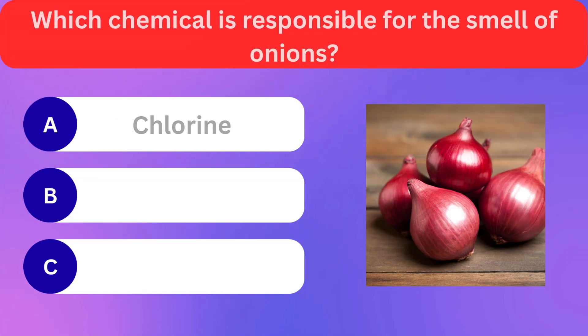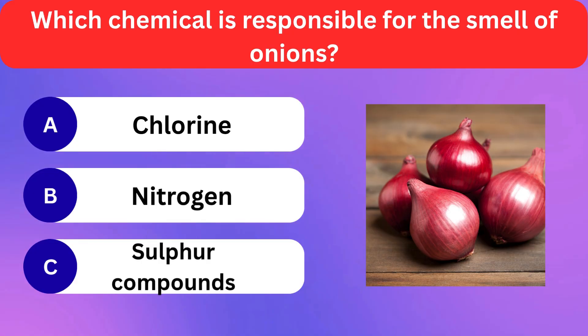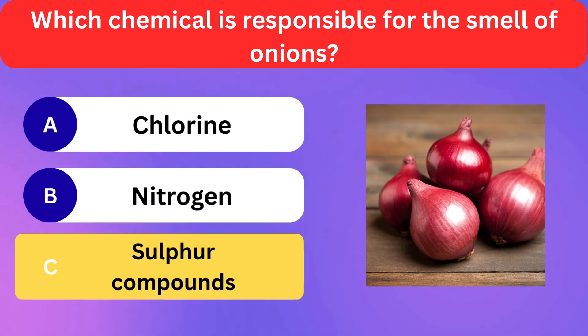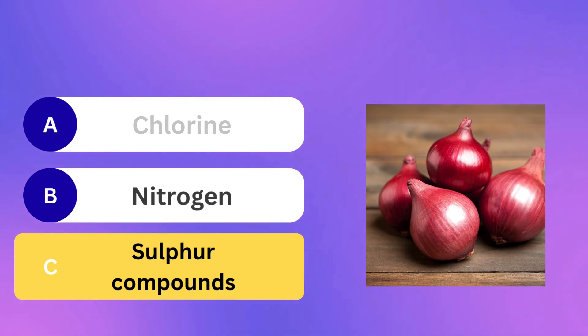Which chemical is responsible for the smell of onions? Chlorine, Nitrogen, Sulfur compounds. Correct answer is sulfur compounds.